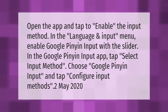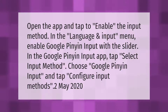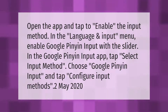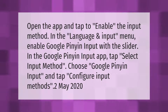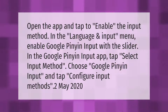Open the app and tap to enable the input method in the Language and Input menu. Enable Google Pinyin input. With the slider in the Google Pinyin input app, tap 'Select input method', choose Google Pinyin input, and tap 'Configure'.